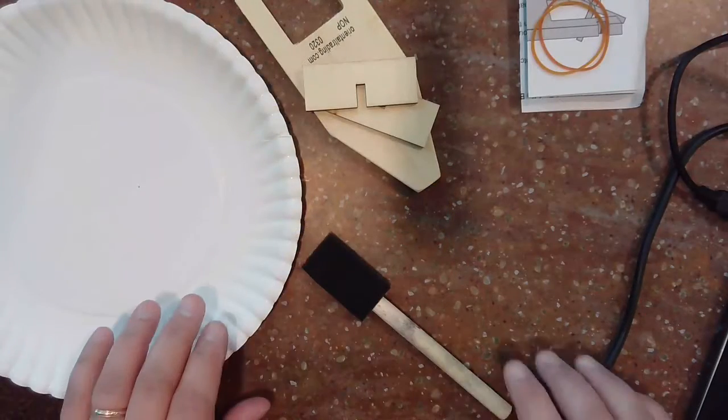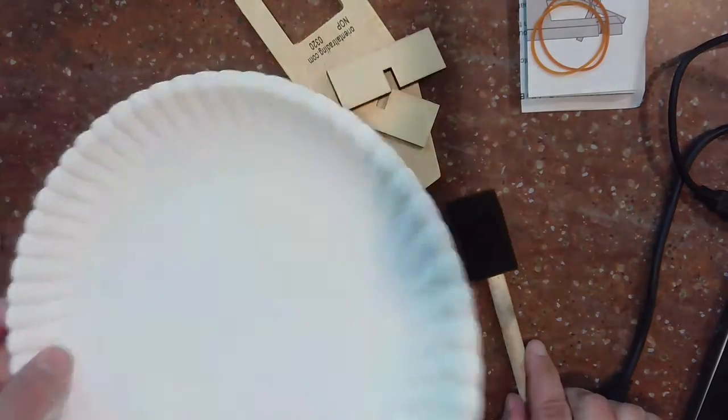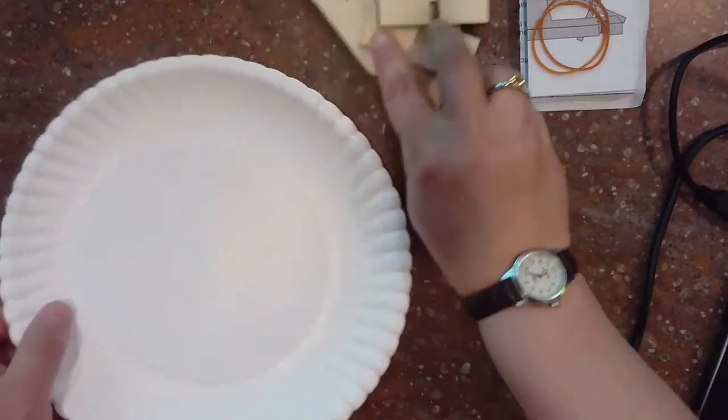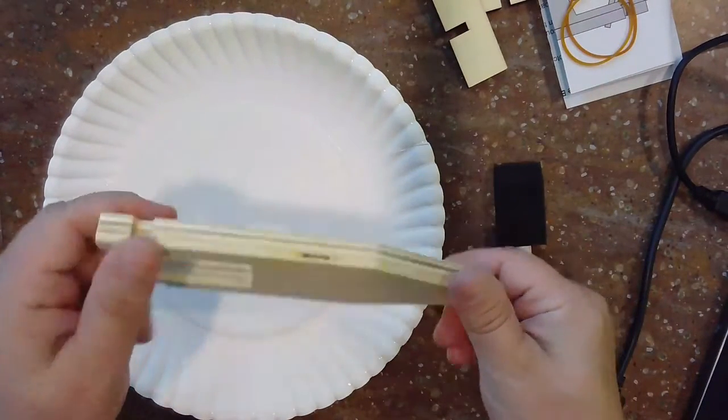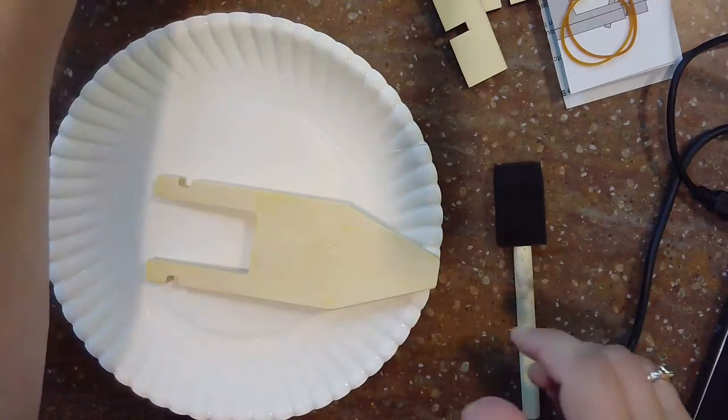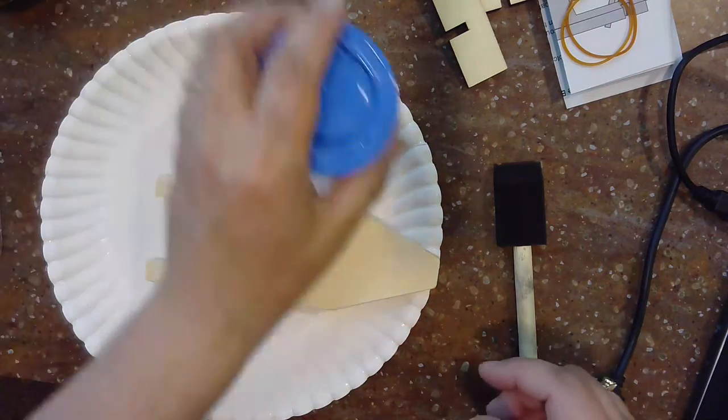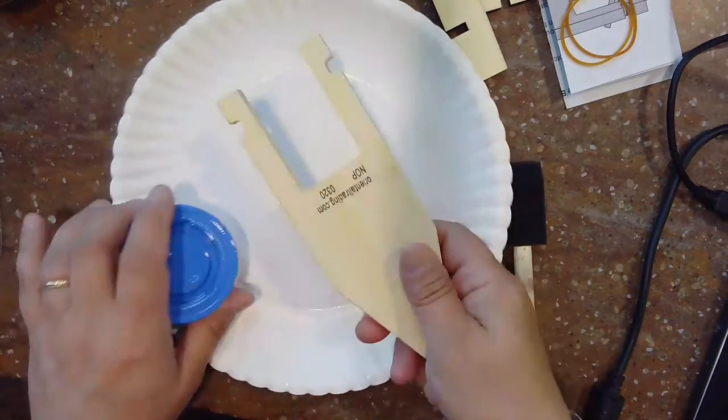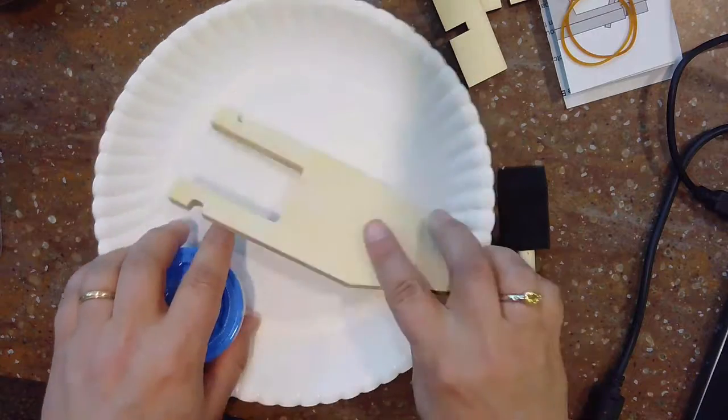The first thing you're going to do before you assemble your paddle boat is to get your area set for painting. You may need a paper plate or paper towel or something down, and decide what patterns and colors you want to use on your paddle boat.